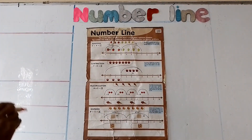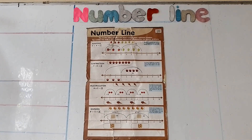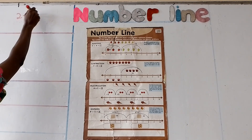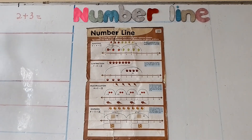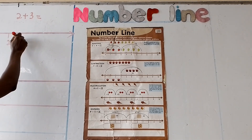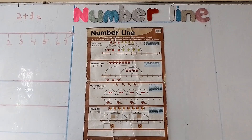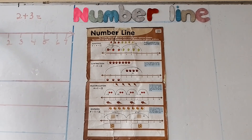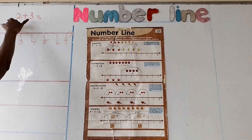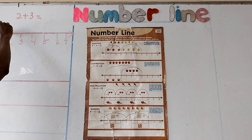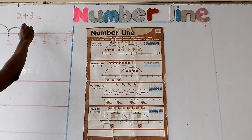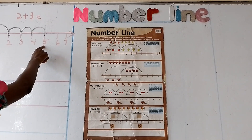I would like to solve all the problems using the number line. Like if I have 2 plus 3. Using the number line. On the number line, the question says 2 plus 3. My first number is number 2, so I move from 0 to 2. 2 plus 3 means I am going to take 3 steps. Let me take the 3 steps: 1, 2, 3. So 2 plus 3, what I have is 5.